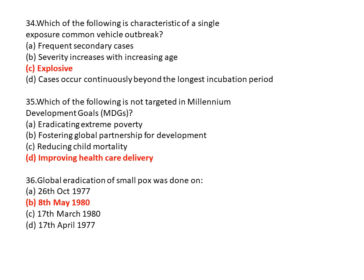Question 36: Global eradication of smallpox was declared on? Option A is 26th October 1977, option B is 8th May 1980, option C is 17th March 1980, and option D is 17th April 1977. So option B is the correct answer — 8th May 1980.